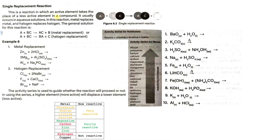Next, we have a single replacement reaction. Here, an element will replace another element in a compound. A more active element may replace a less active element. So for example, A is much more reactive compared to B, so it will replace B in this compound. The products here will be AC plus B.